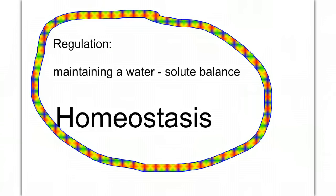With all of our cells hard at work metabolizing, we are consuming and producing various products that we distribute throughout the body, and we produce waste products that must be removed. Yet, despite all the change, despite the system being in a constant state of flux, our bodies manage to keep the water and solute balance within a tolerable range. Our body, our systems, our organs, and our cells work to maintain homeostasis.